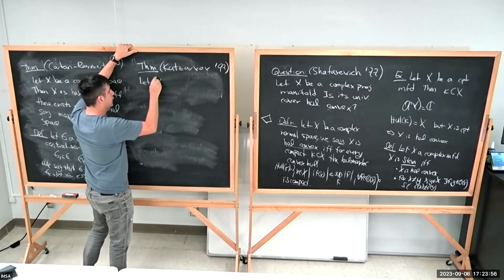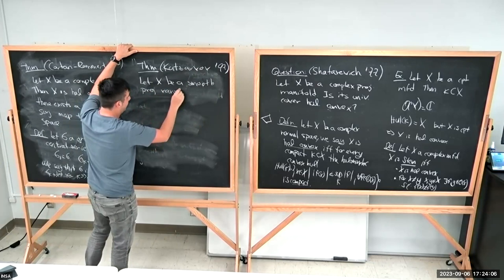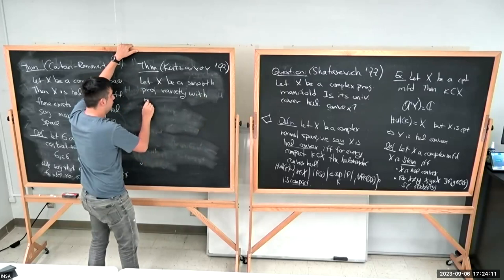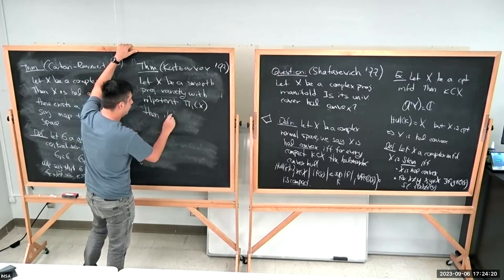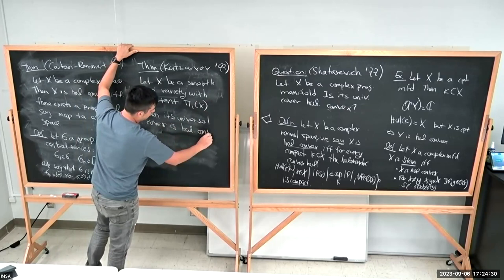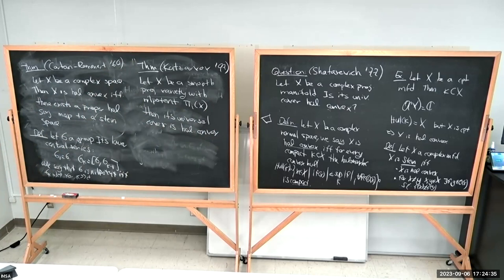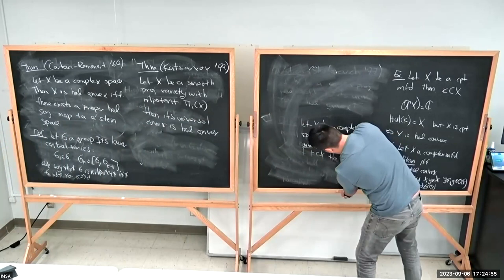The first main theorem I want to discuss is due to Katzarkov in 1997. It says: if X is a smooth projective variety with a nilpotent fundamental group, then its universal cover is holomorphically convex. In other words, Katzarkov solved the Shafarevich conjecture when the fundamental group of a smooth projective variety is nilpotent.